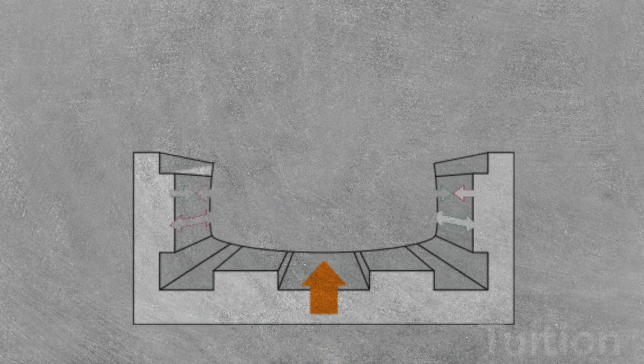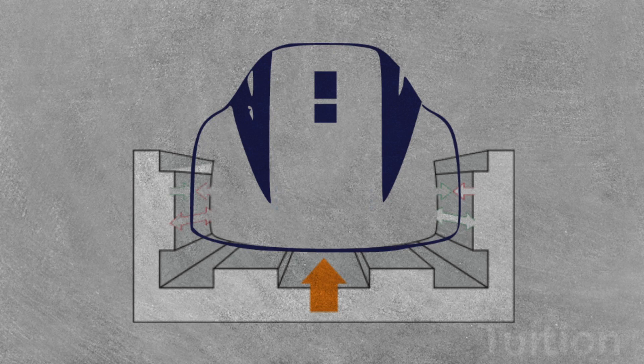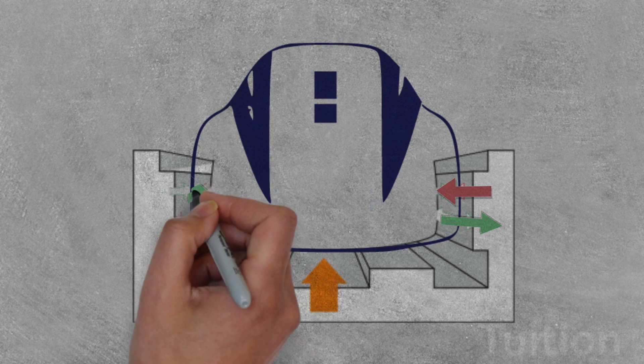Let's see how these trains actually work. Once a train is levitated, power is supplied to the coils within the guideway walls to create a unique system of magnetic fields that pull and push the train along the guideway.